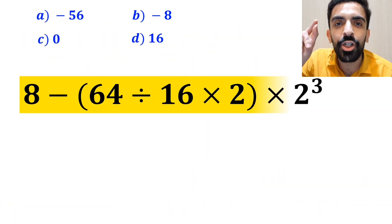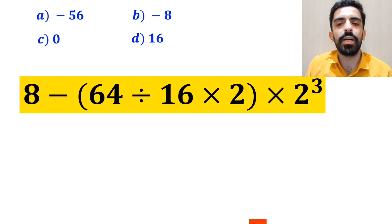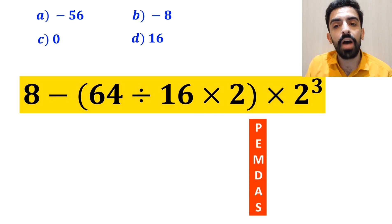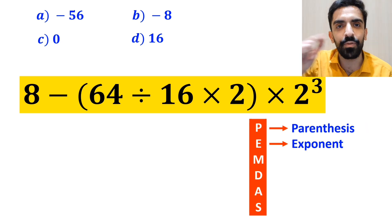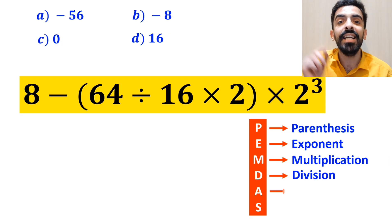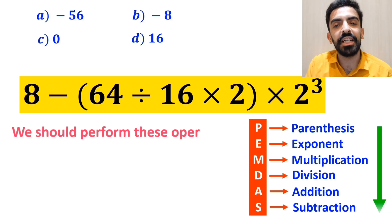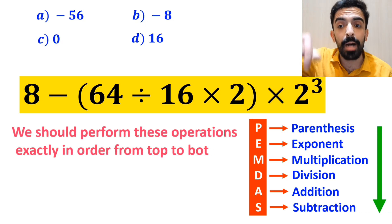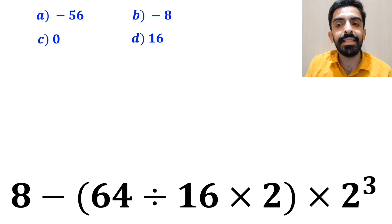Now let's go step by step together and show how to solve this expression properly. To solve this question we need to follow the order of operations, which is PEMDAS. P stands for parentheses, E stands for exponent, M stands for multiplication, D stands for division, A stands for addition, and S stands for subtraction. We should perform these operations exactly in order from top to bottom according to the PEMDAS rule.